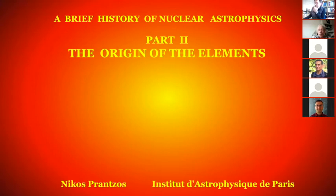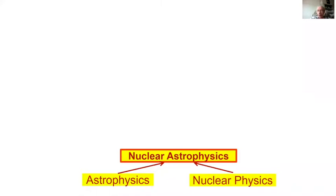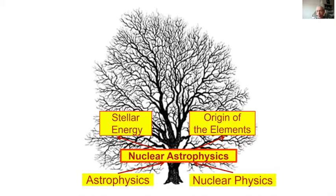Good afternoon everybody. The second part of this short history of nuclear astrophysics is about the origin of the elements — how we learned about the origin of the elements in the 20th century. As we said in the first part, nuclear astrophysics emerged in the early 20th century with two main objectives: the origin of stellar energy, which we covered last time, and the origin of the chemical elements in the universe.